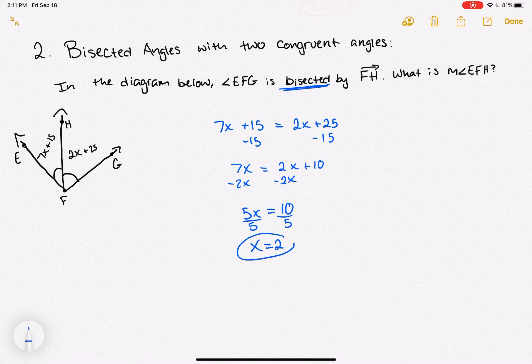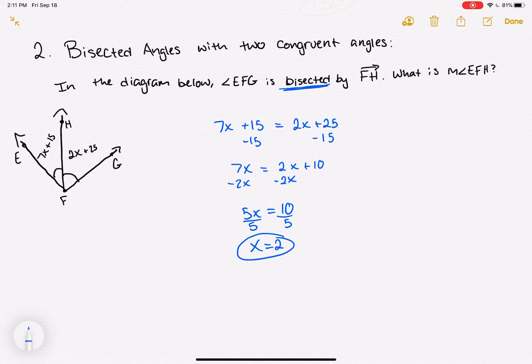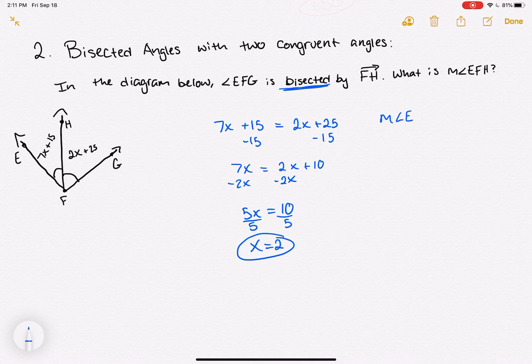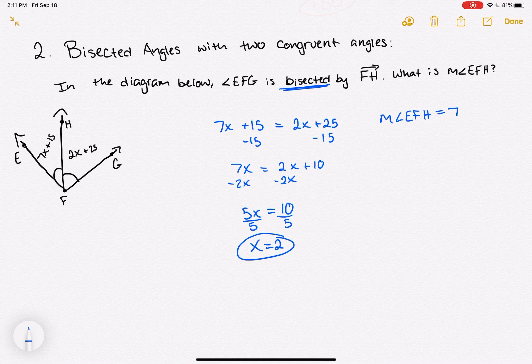Now that we know x, we can use that to find our missing angle measure. So we are trying to find the measure of angle EFH, which we know is equal to 7 times x, which we now know is 2, plus 15.